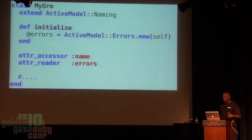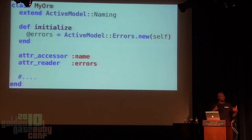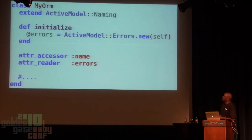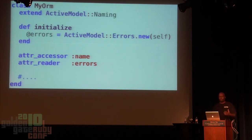The cool thing about Active Model is that it's basically a set of helpers you probably should be using but don't have to. Here's a good example: if you want easy, easy, easy errors on your models, you actually don't need any more code than about eight lines — including the spaces. These few lines will give you real errors and an Active Record error object you can work with inside your forms on your pages.